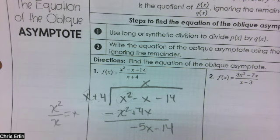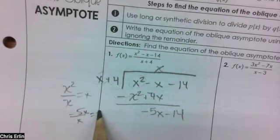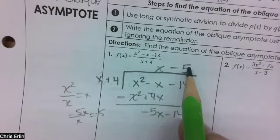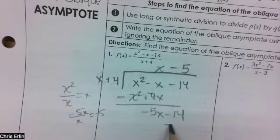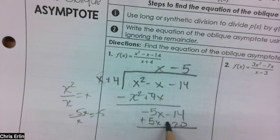Now I'm going to say x goes into negative 5x. In other words, what's negative 5x divided by x? I get negative 5. Negative 5 times positive 4 is negative 20. Negative 5 times x is negative 5x. Change the signs and add and I get a 6.